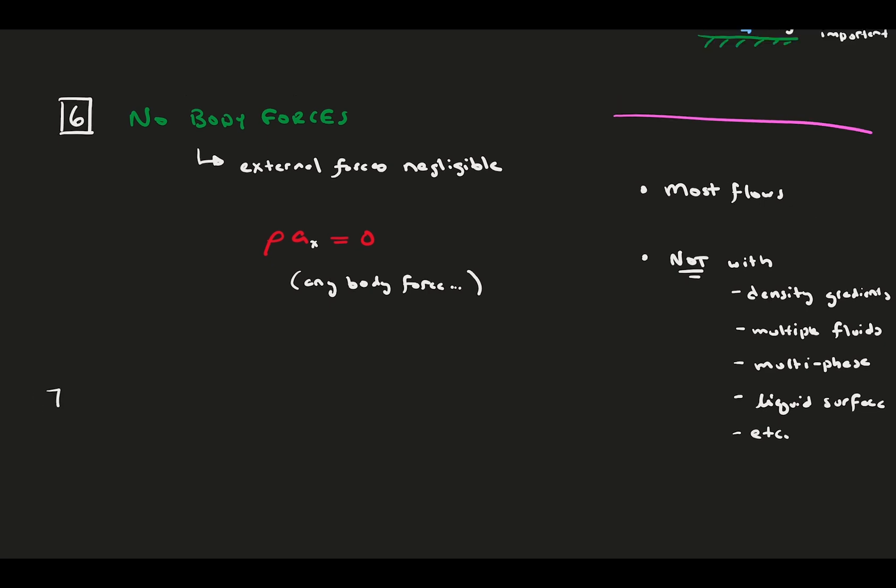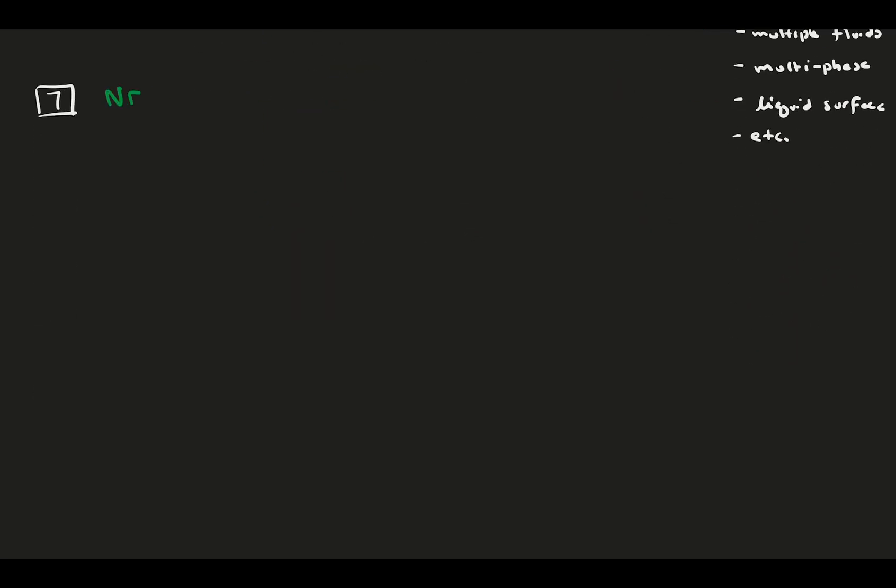And finally, a common assumption that is made at the outset of fluids analysis is that you are working with a Newtonian fluid. Physically, this means that the fluid viscosity is constant and doesn't depend on the stress it's feeling. It's called Newtonian because Newton's law of viscosity defines this constant behavior. When you have a fluid that breaks this assumption, it's called a non-Newtonian fluid.